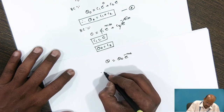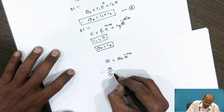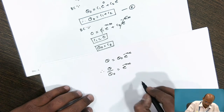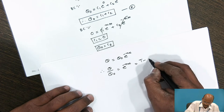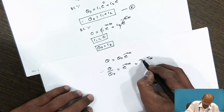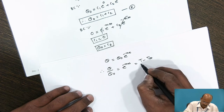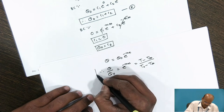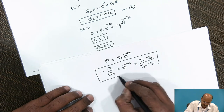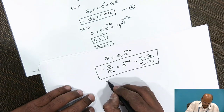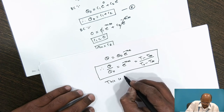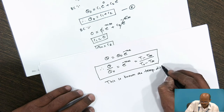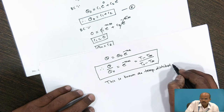Substituting the constants, θ becomes equal to C₂·e^(−mx), and since C₂ = θ₀, we get θ = θ₀·e^(−mx). Taking the ratio, θ/θ₀ = e^(−mx), which is the temperature distribution equation — that is, (T − T∞) / (T₀ − T∞) = e^(−mx).